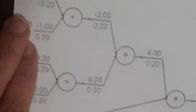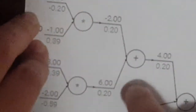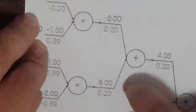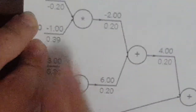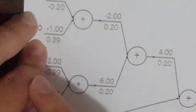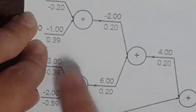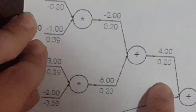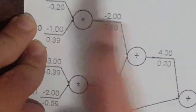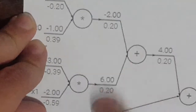Here we have the same thing — another add gate. x + y gives us +1 for each input. We multiply by our previous gradient and get 0.2 and 0.2.